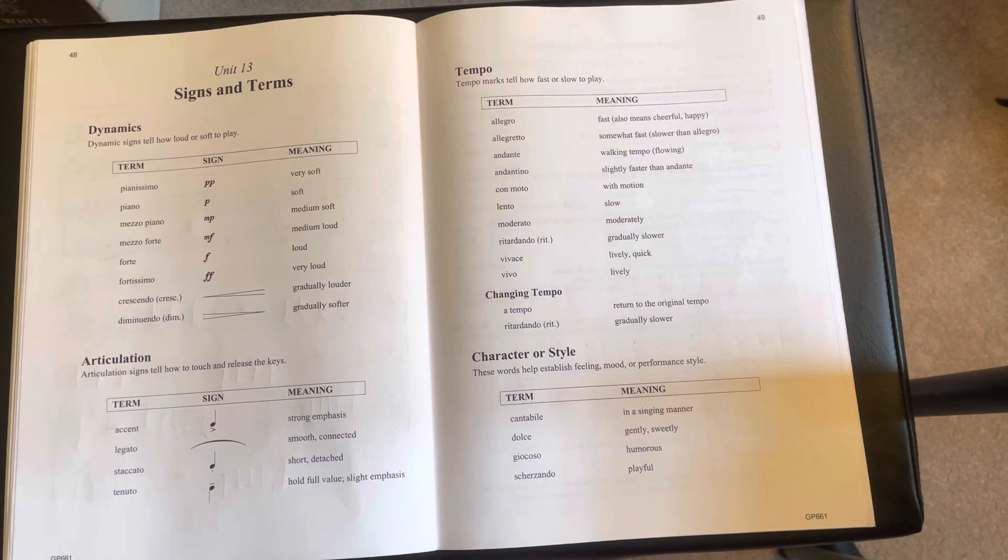So con moto, with motion, lento, slow, moderato, moderately, retardando, gradually gets slower, vivace, lively, quick, and vivo, lively.